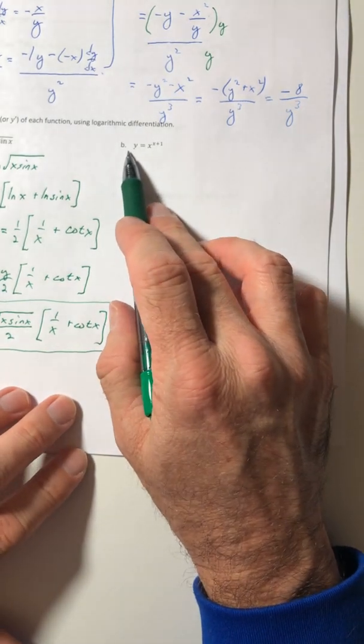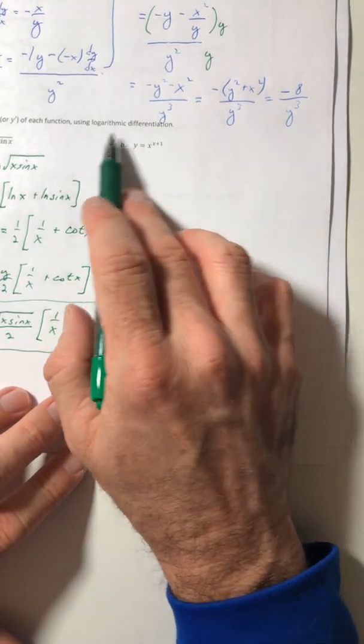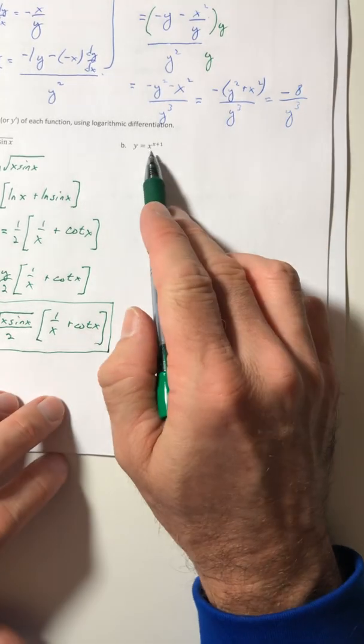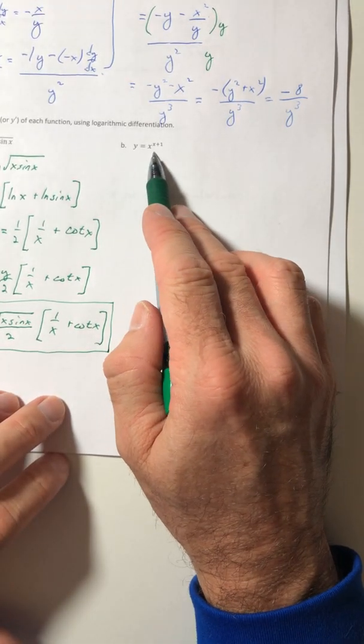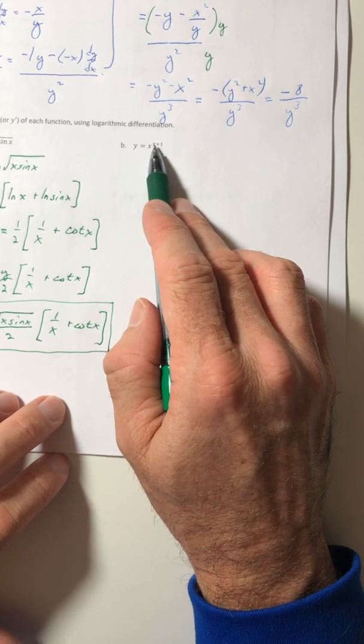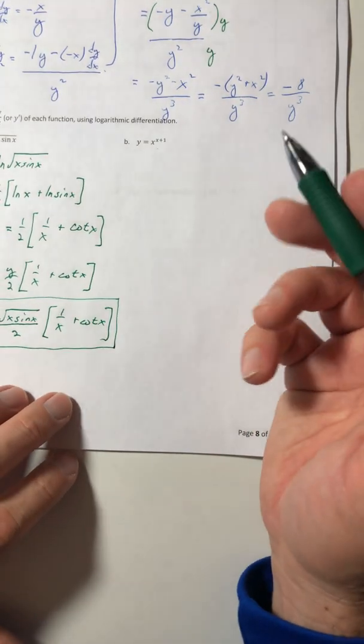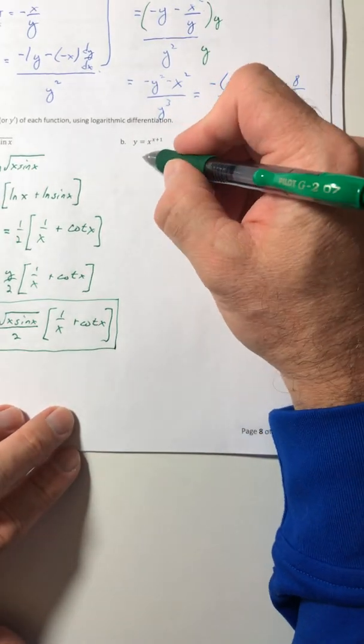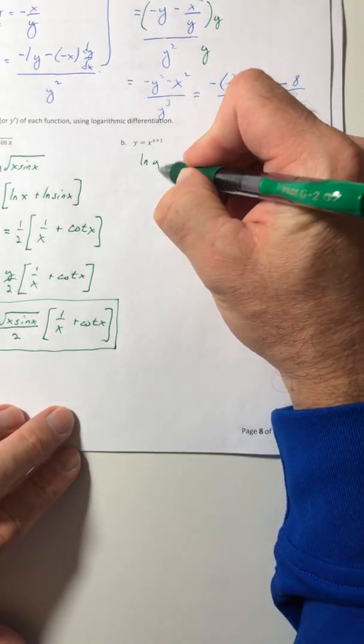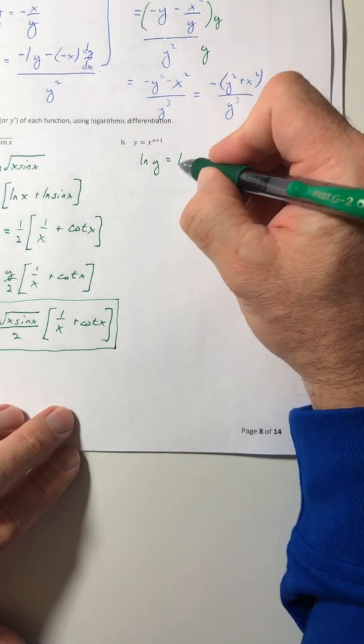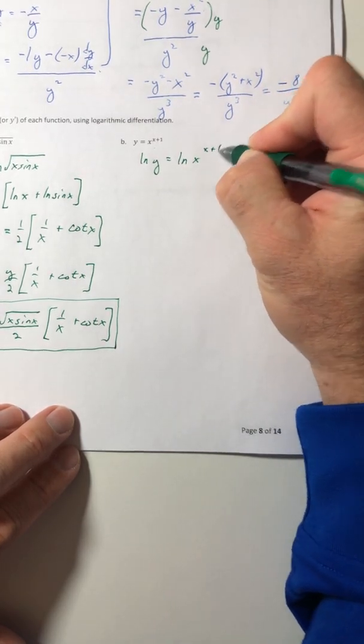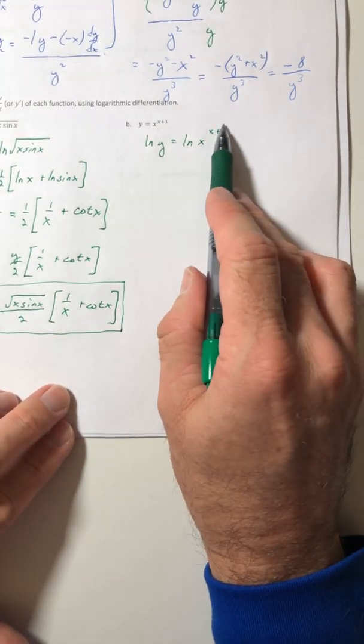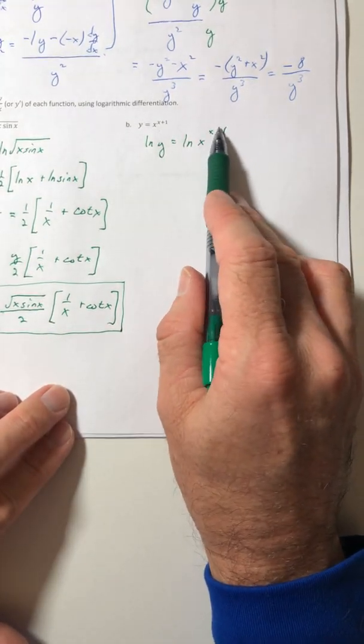Okay. Let's try this last example here. Now this one, you would have to use this method because no other technique would apply to this derivative because you have a variable as the base and also the exponent. So we have no rule that accounts for that. So let's take the natural log of both sides. And I'm still going to use my log properties because I can take this x plus one, this exponent and pull it down.